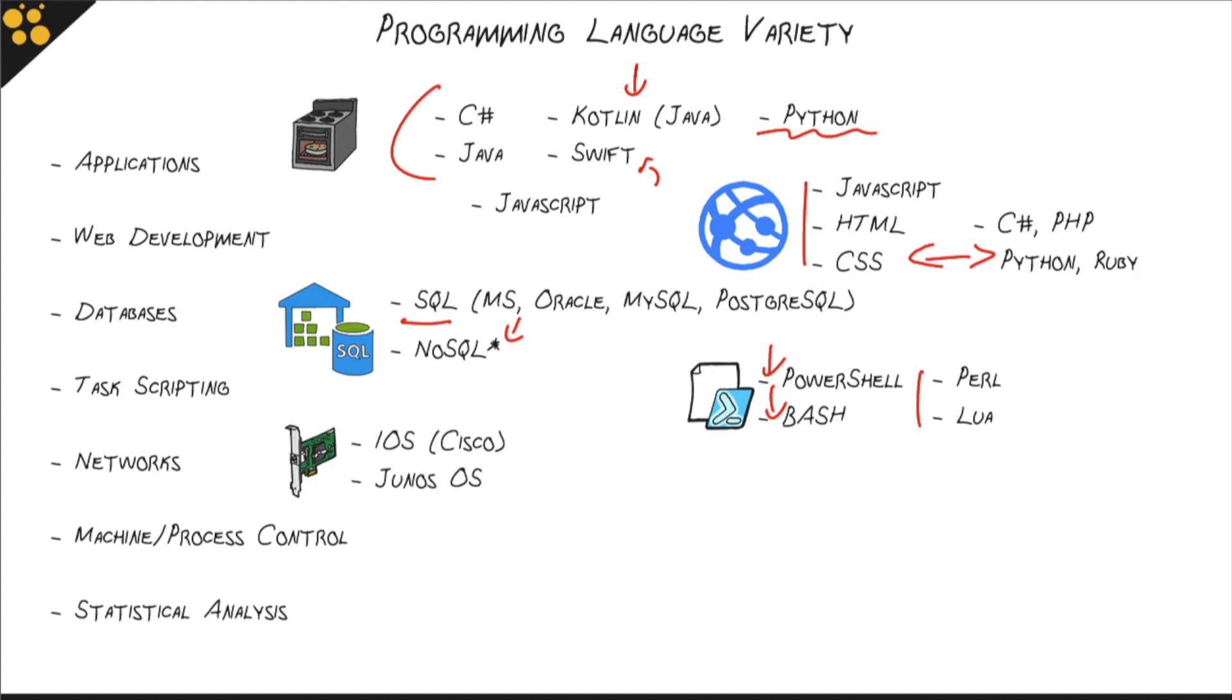Network programming is another vendor-specific one, like databases. The two big ones, Cisco and Juniper, use iOS and Junos OS, but once again, Python shows up here as well. Most network devices, modern network devices, support a lot of Python programming in their development. Another reason to learn Python programming. It can be used in a wide variety of places.